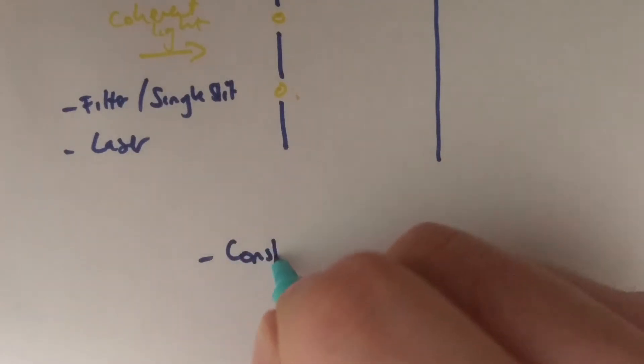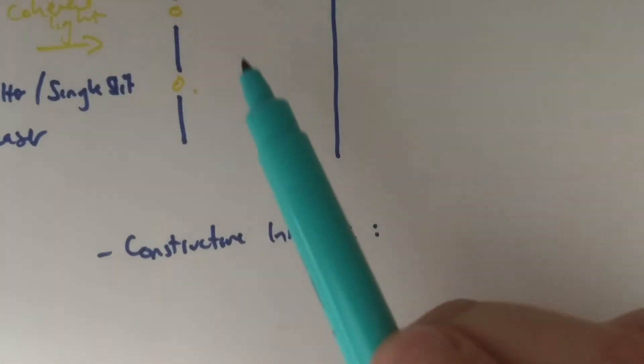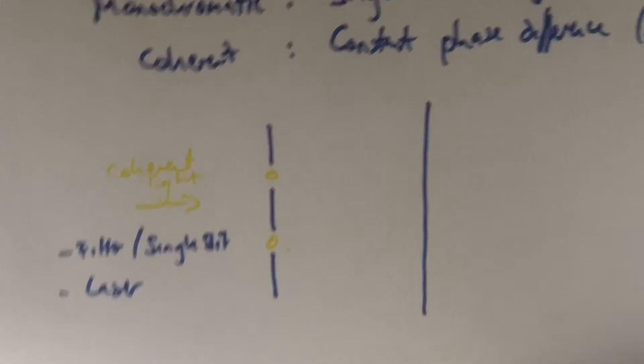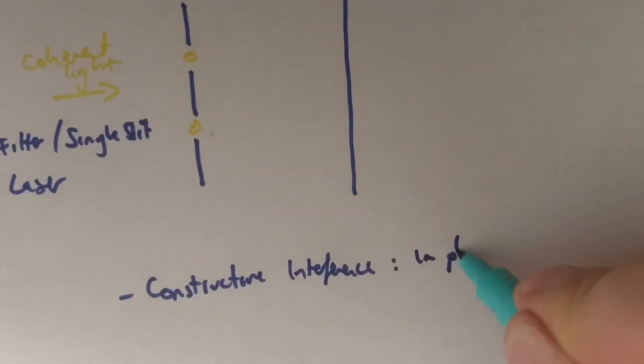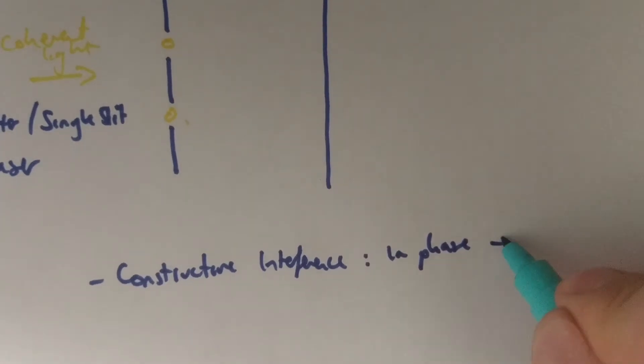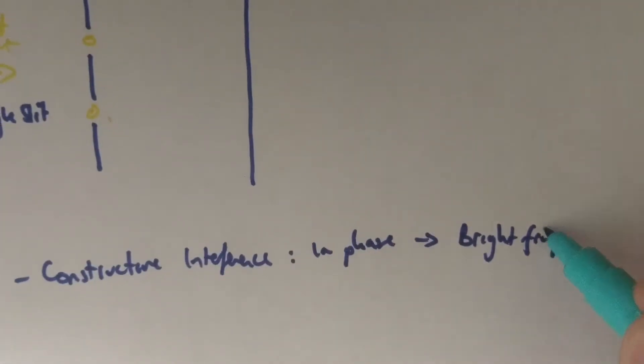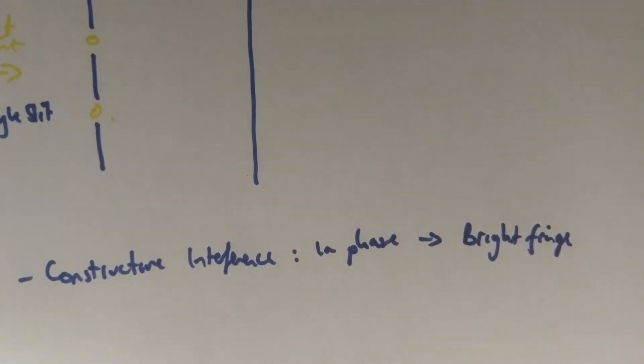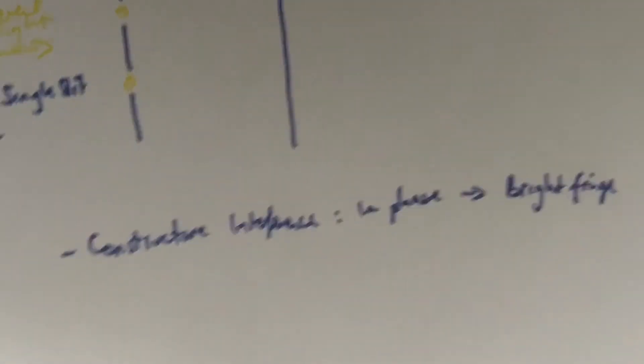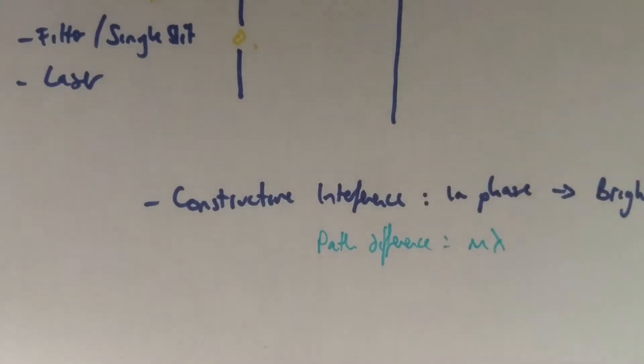The first thing we get in some places is constructive interference. Constructive interference happens when the light from the two sources reaches the screen and is in phase. If our light is in phase, it means we're going to see a bright fringe. We're going to be reinforcing each other and producing something that's a bright fringe. This happens if the path difference between the two slits is a full number of wavelengths, so we call it M lambda.